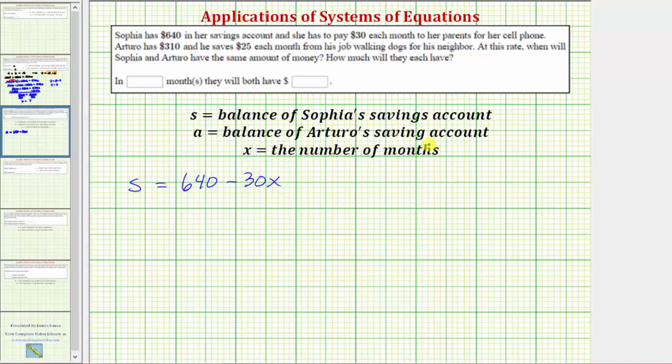And now for the equation for Arturo's balance, we would have A equals the starting balance of $310. But then he is saving $25 each month from his job and therefore Arturo's balance would be $310 plus 25x.